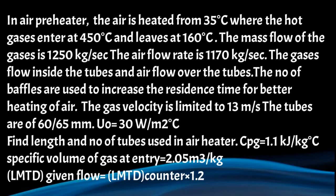The gases flow inside the tubes and air flows over the tubes. Baffles are used to increase the residence time for better heating of the air. The gas velocity is limited to 30 meter per second. The tubes are 60 or 65 millimeter. Taking overall heat transfer coefficient as 30 Watt per meter square degree Celsius, find the length and number of tubes used in the air heater. Take CPG equal to 1.1 kilojoule per kilogram degree Celsius and specific volume of gas at entry VGI equal to 2.05 meter cube per kilogram. LMTD of given flow equals LMTD counter multiplied by 1.2.